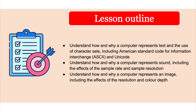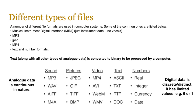Since computers only process binary, all data from other types of information must be converted to binary for processing. You've already looked at converting numbers, but text, images, and sound also have to be converted into binary. Analog data is continuous in nature, whereas digital data is discrete or distinct — limited, for example, to zero or one. So one form of data needs to be converted into another, and then also stored.